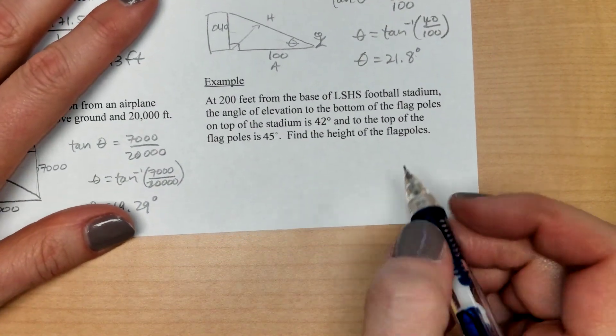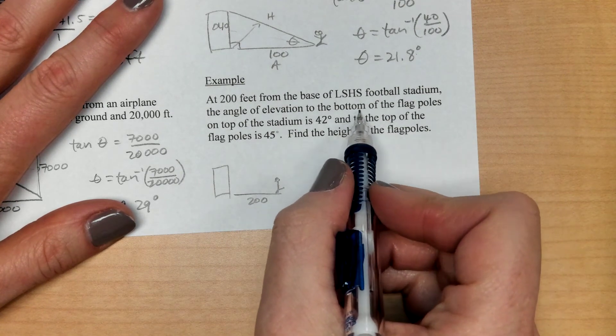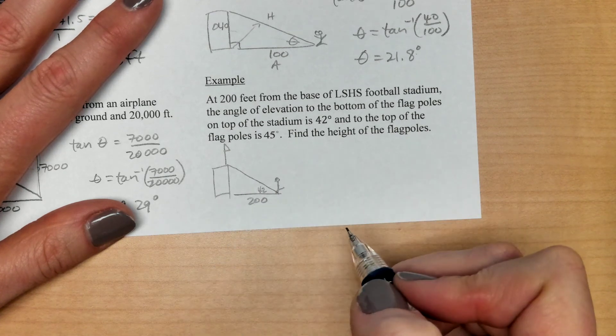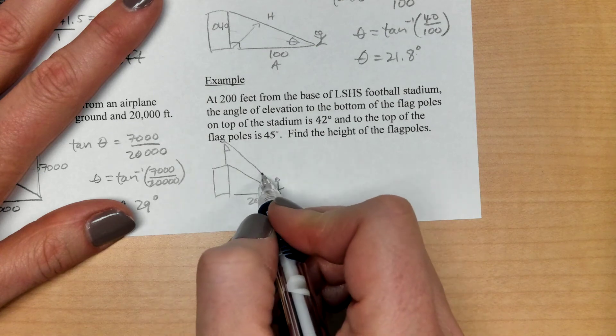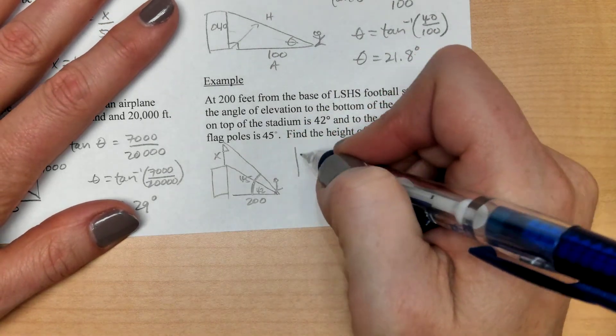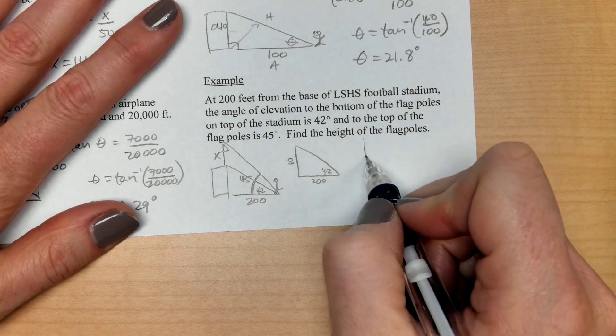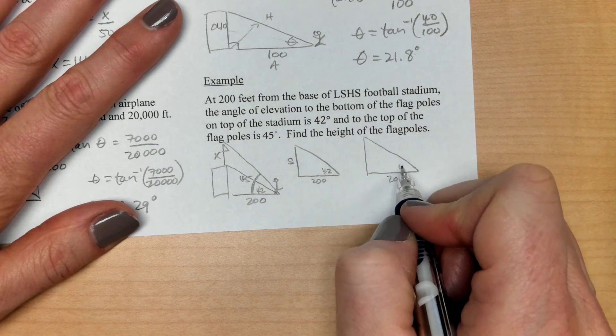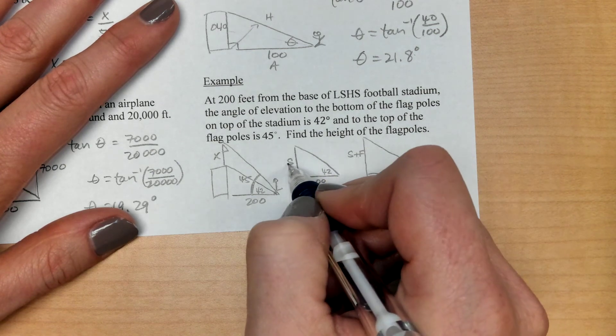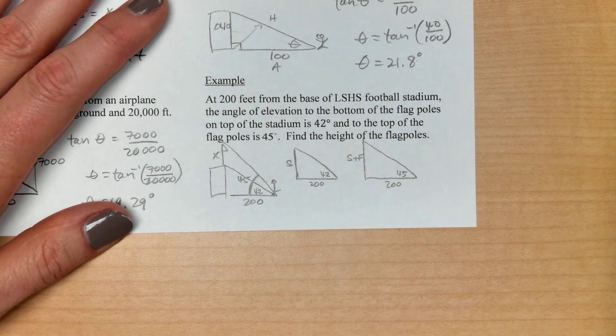Last one says 200 feet from the base of the Lakeville Football Stadium. And I'm 200 feet away. The angle of elevation to the bottom of the flagpole. So there are flagpoles on the top of our stadium, if you've ever noticed them. And the angle of elevation to the bottom has been measured at 42 degrees. And then the angle of elevation to the top of the flagpoles, that whole thing has been measured as 45. So they would like to find the height of the flagpoles. What we really have here are two separate triangles. We have the first one with the 42 and 200, and this is just essentially the stadium. And then we have the second triangle, which is still 200 feet away, but the angle changes to 45. And this is the stadium plus the flags. So my job would be to find both of these values, and then I could just subtract. So if this is just the stadium, this is the stadium plus the flags. And I subtract the two, I would be left with just the flags. Then I can find out how tall the flagpoles are.